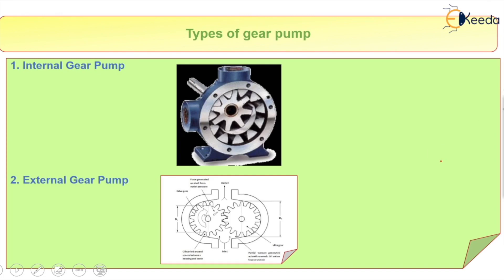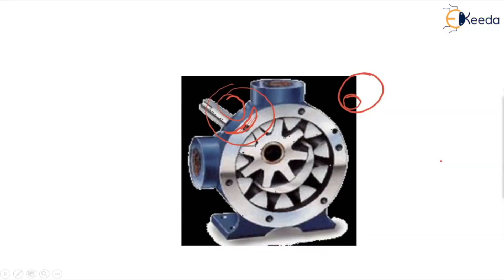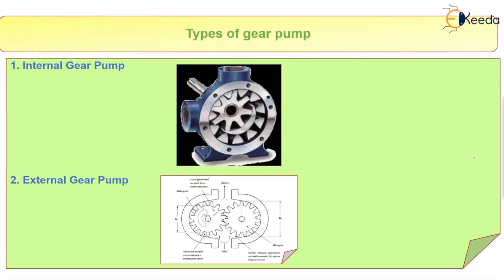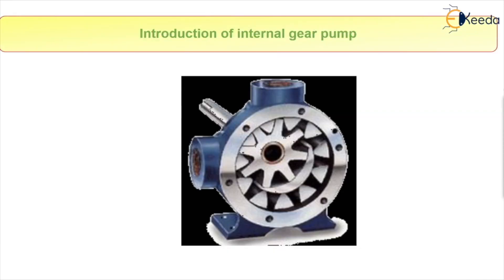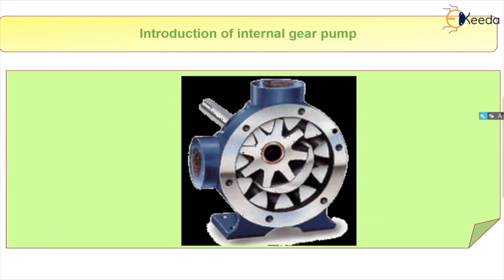For the internal gear pump, this is one gear and the smaller one is the other gear. This is the internal gear and this is the stationary part. The second type is the external gear pump. For the internal gear pump: this is the ring gear (the outer gear), this is the inner gear, and this is the stationary part. The inner gear is connected to a shaft, and the remaining portion is the casing. Liquid will come in and go out — or it may be reversed — as per the direction of the internal gear.